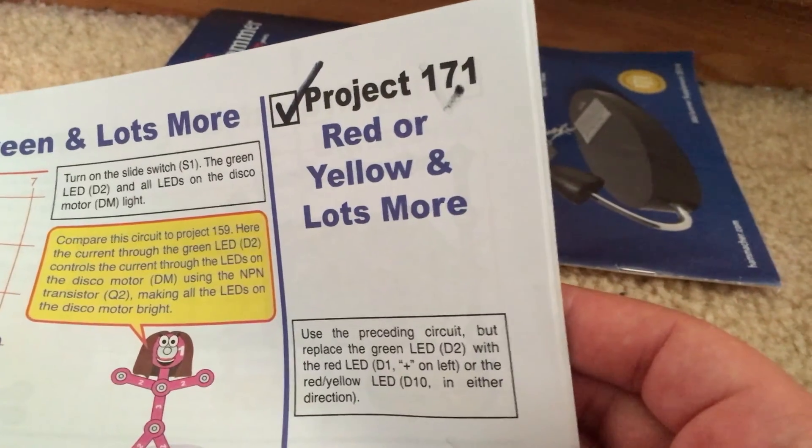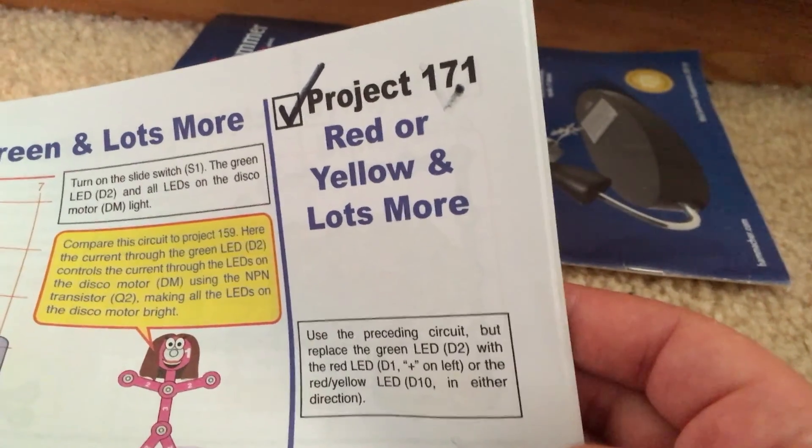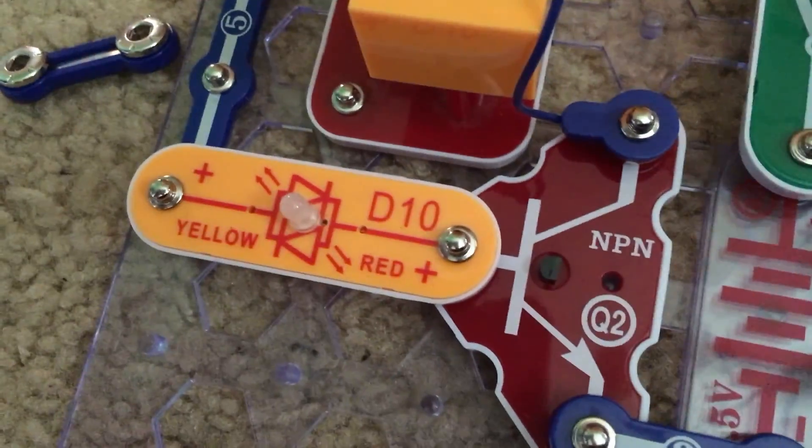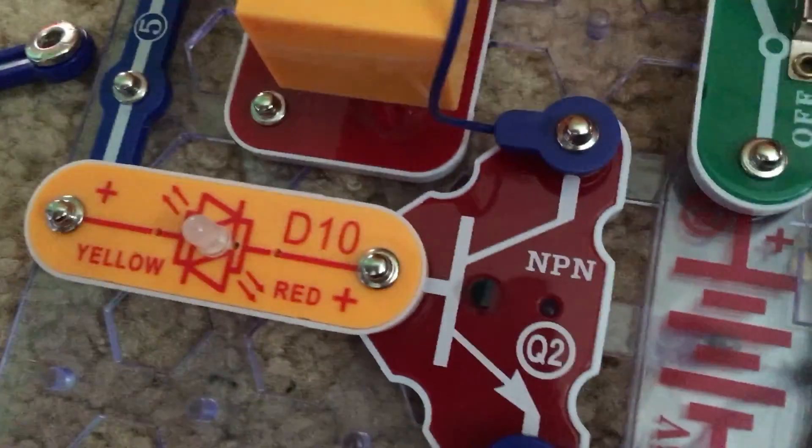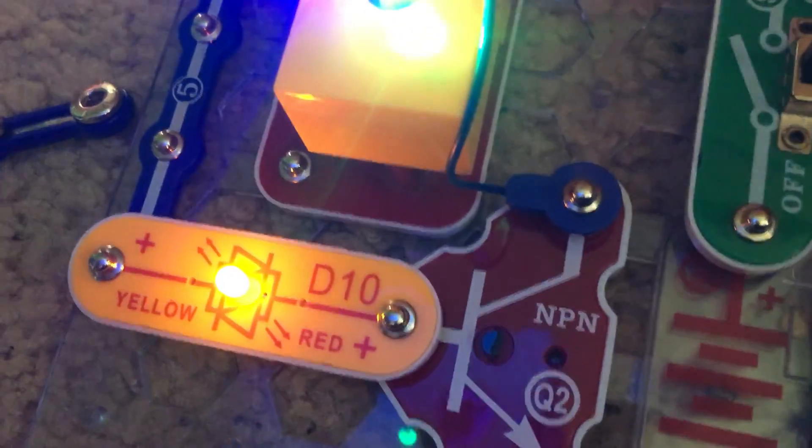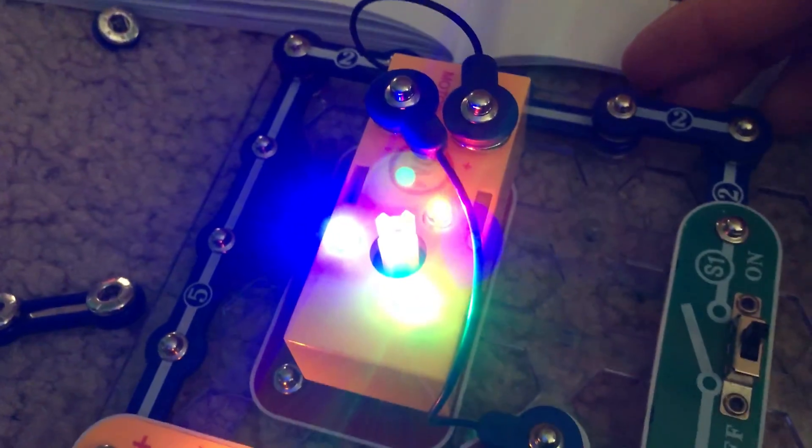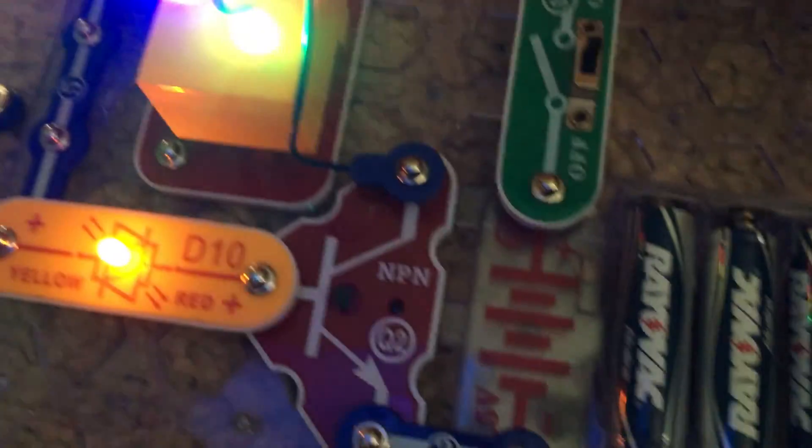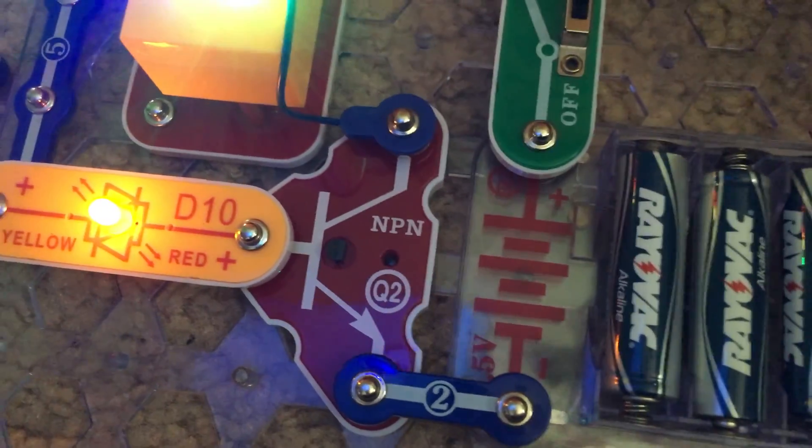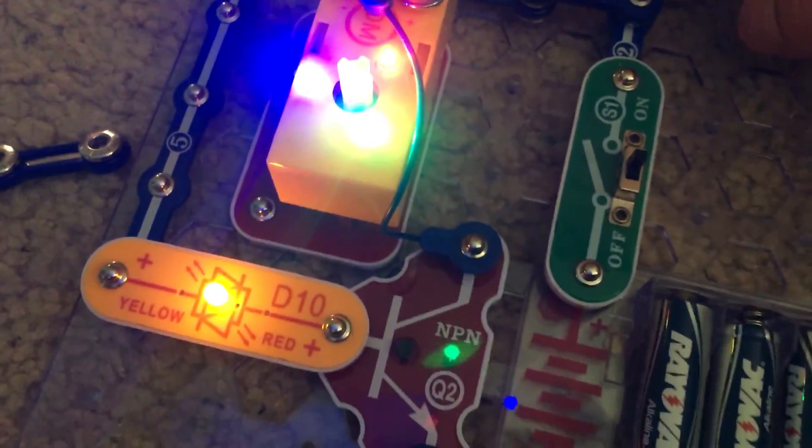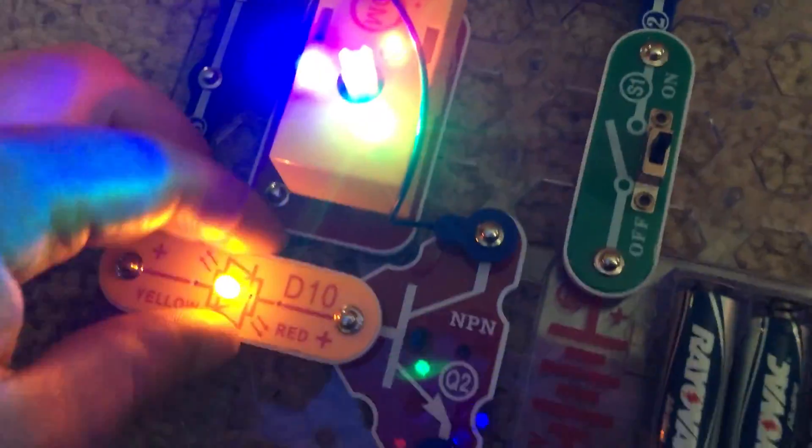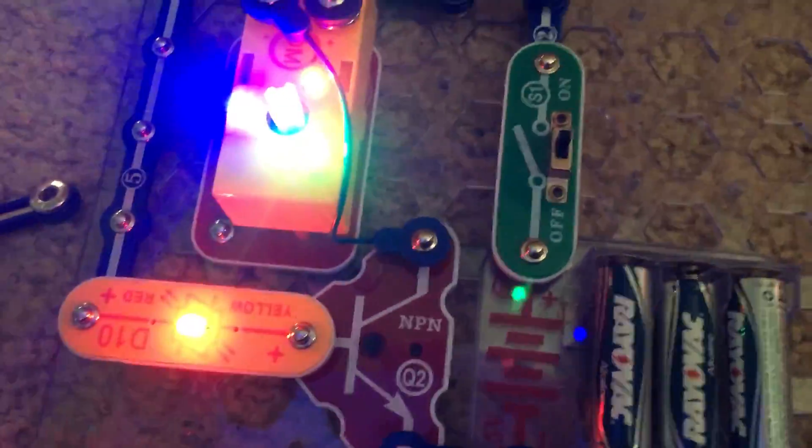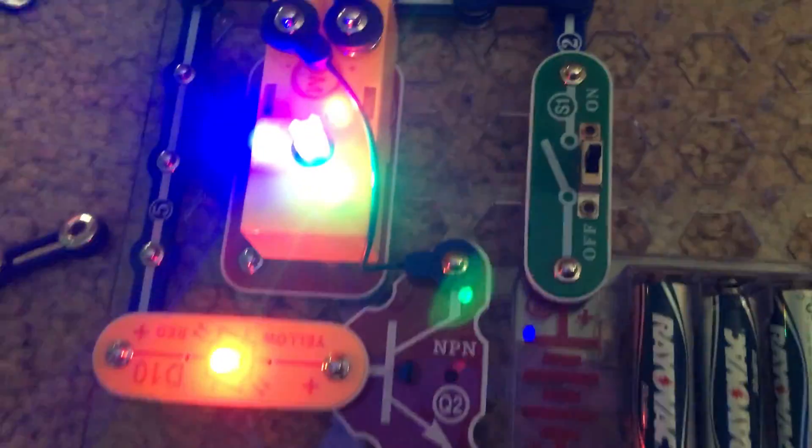Project 171 is called red or yellow and lots more. You can replace the green LED with either the red LED or the bicolor LED in either direction. Right now we have the yellow LED on, and when we turn on the switch all LEDs are lit. The NPN transistor has the same principle as in Project 170. I'm going to actually rotate it so you can see the effect of the red LED and it's pretty much the same.